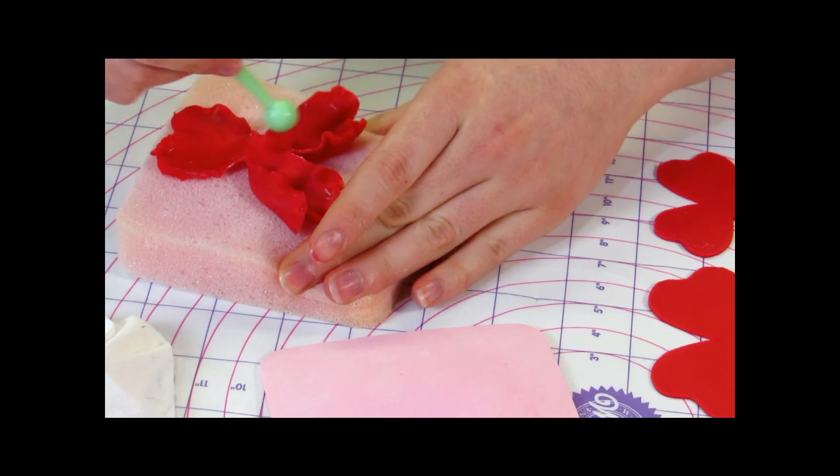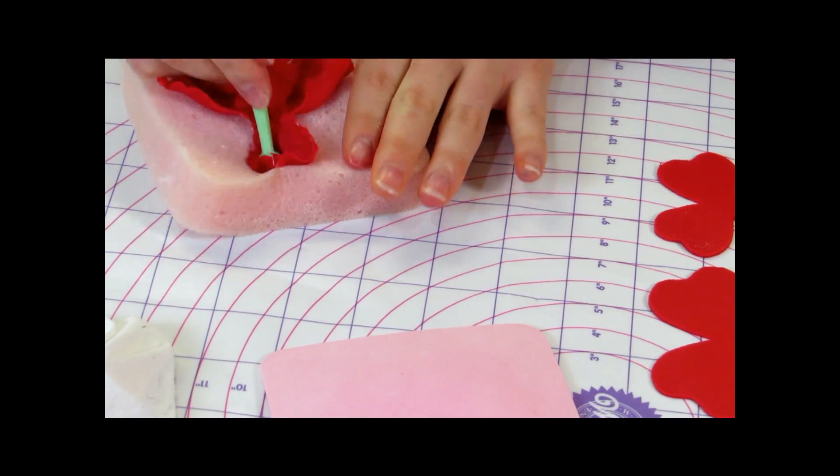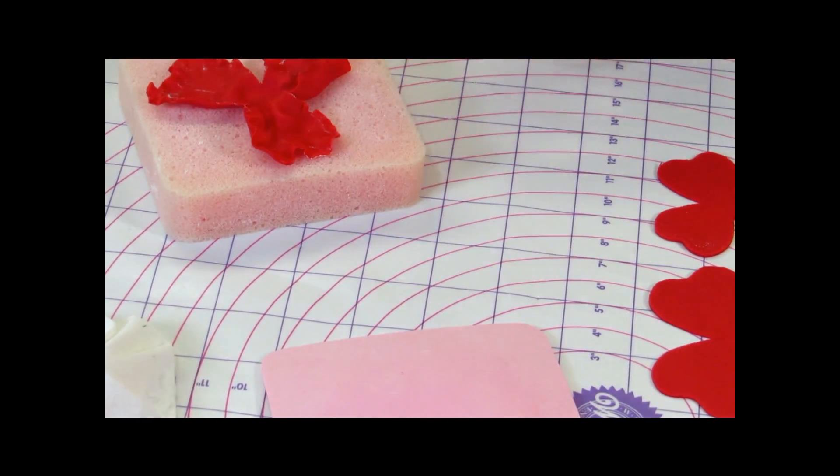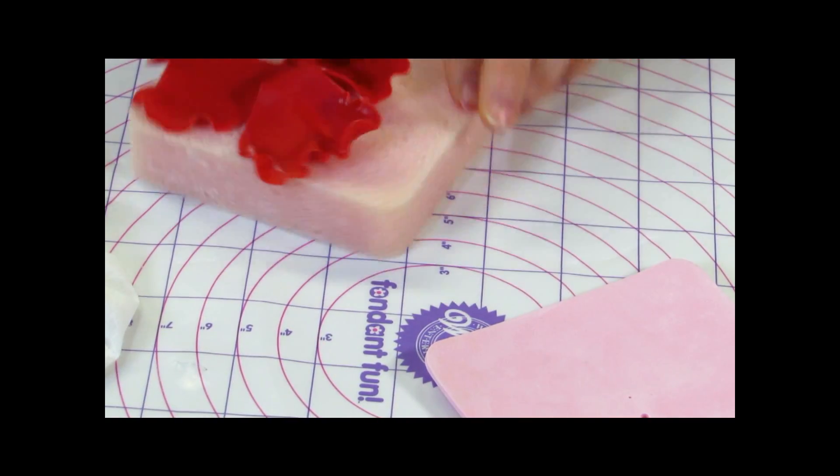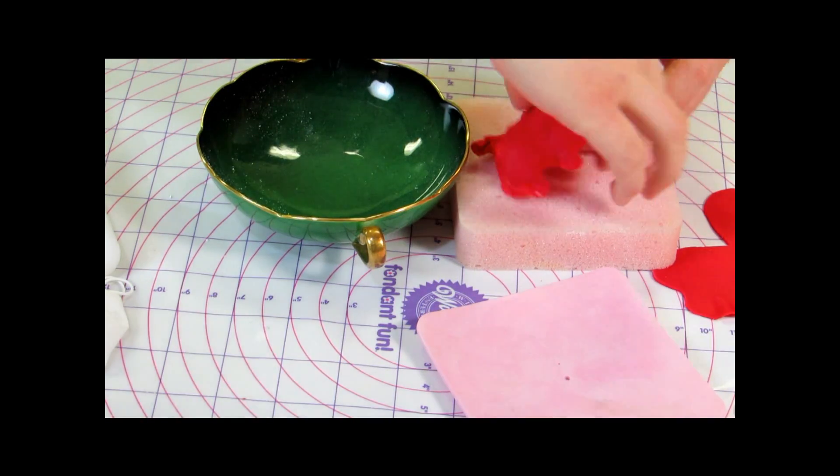So once that's done, use a thick piece of foam and then you just want to use your balling tool again and you're pulling in on the petals like that and you can see how that will just cup up each of the petals.